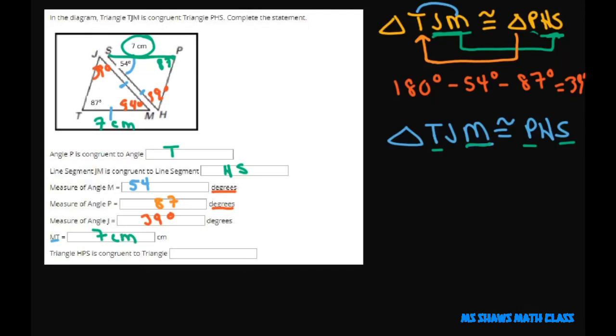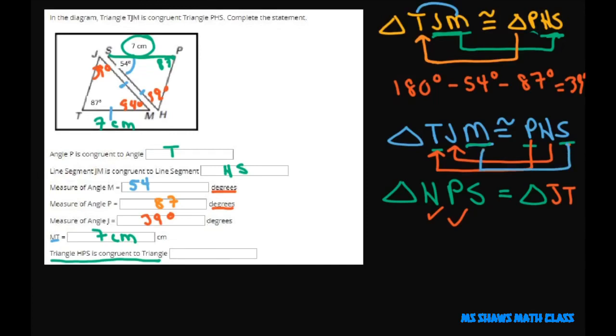And then since the two triangles are congruent, we're going to do it again. We're going to say triangle HPS is congruent to what triangle. So we're just going to look at this. H goes with J, P goes with T, so put T here, and S goes with M, so we're going to write M here. So this would be triangle JTM.